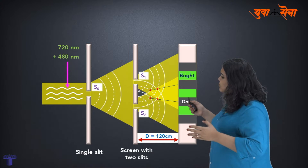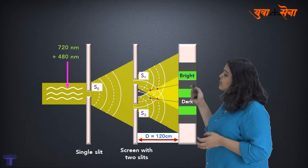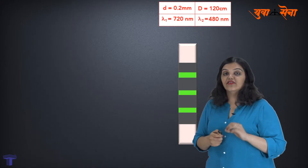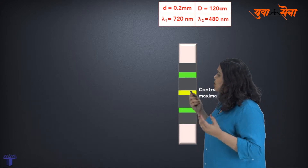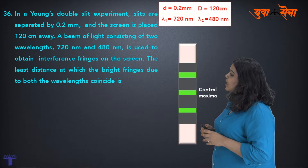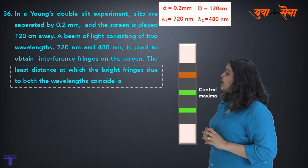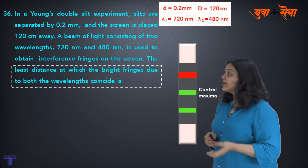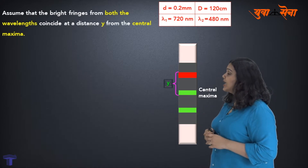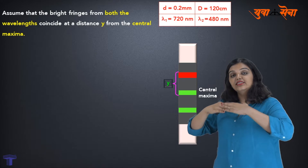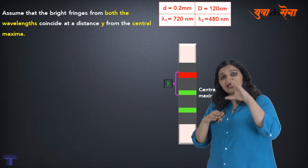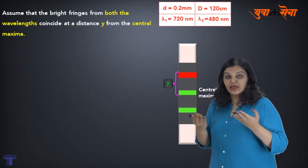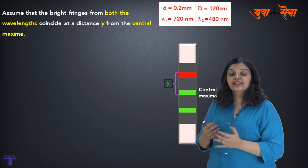Now let's solve the problem. We have small d, capital D, and the two wavelengths. I'll save the given data. We need to find the least distance at which the bright fringes due to both wavelengths coincide. Let me assume the bright fringes coincide at some distance y from the central maxima. The central maxima is our reference point, and at distance y both bright fringes coincide, so the distance y is the same for both wavelengths.